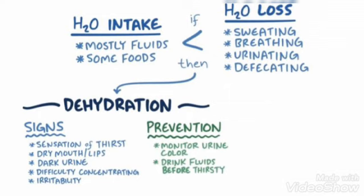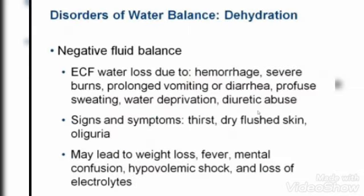The distal and collecting tubules inside nephrons will reabsorb water. When dehydration occurs and cells become dry, there will be signs and symptoms like sensation of thirst, dry mouth, dry lips, dark urine — yellow colored urine — difficulty in concentration, and irritability. At that time more water intake is needed. We have discussed that water loss occurs through sweating, breathing, urination, and defecation. Also in case of vomiting and diarrhea, water loss occurs and solutes are also lost.